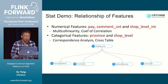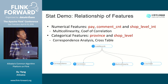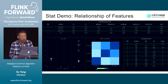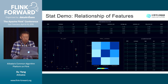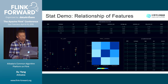Next we show the relationship of features. First are the numerical features, and second are the categorical features — they use different statistical methods. On the top is the model linearity, in the middle is the correlation matrix, on the left is the correspondence analysis, and on the right is the ranking list as a cross table.